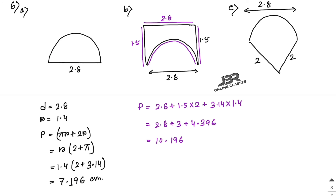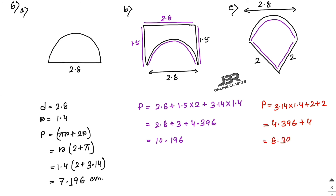For shape C, the perimeter equals pi·r plus 2 plus 2. With pi equals 3.14 and r equals 1.4, pi·r equals 4.396. So 4.396 plus 4 equals 8.396 centimeters. Comparing all three: 10.196 is the longest perimeter, so the answer is shape B — the ant would have to take the longest round for food piece B.